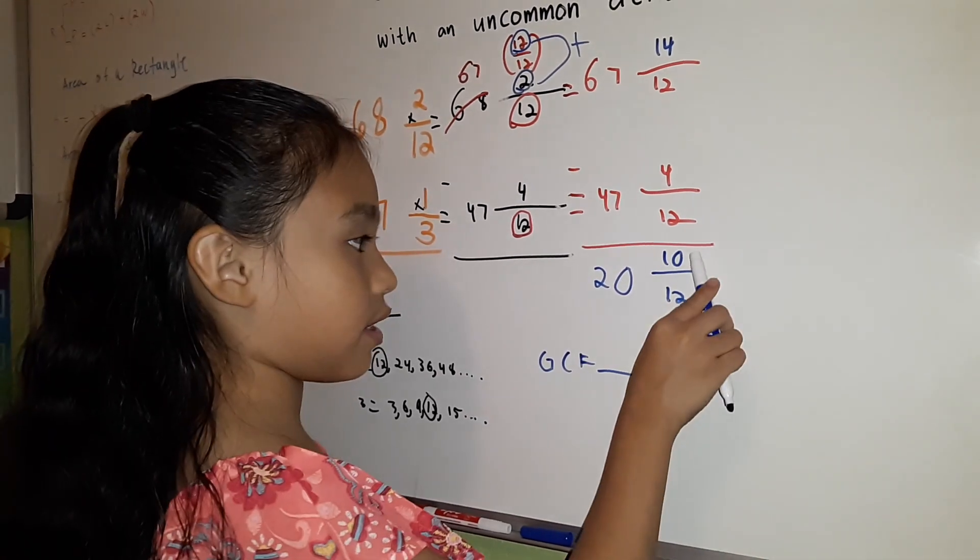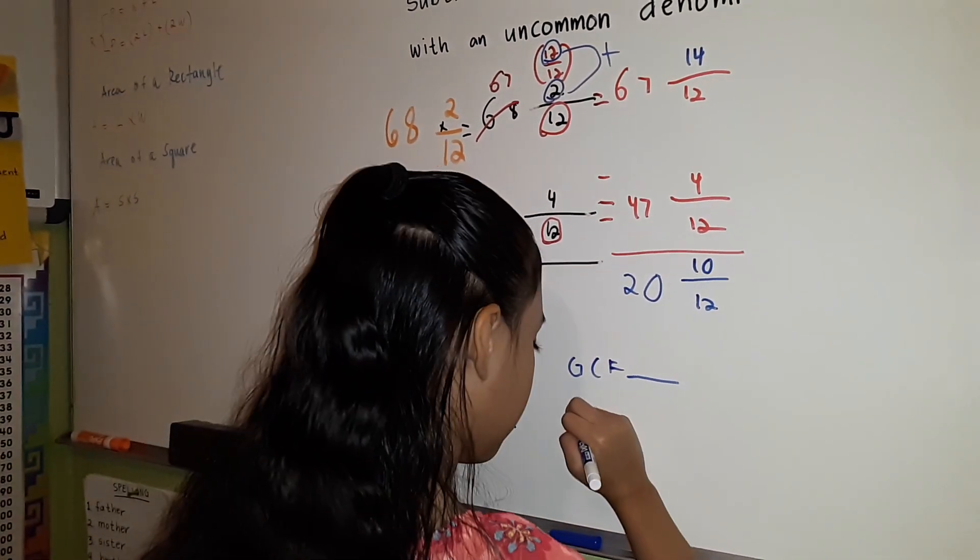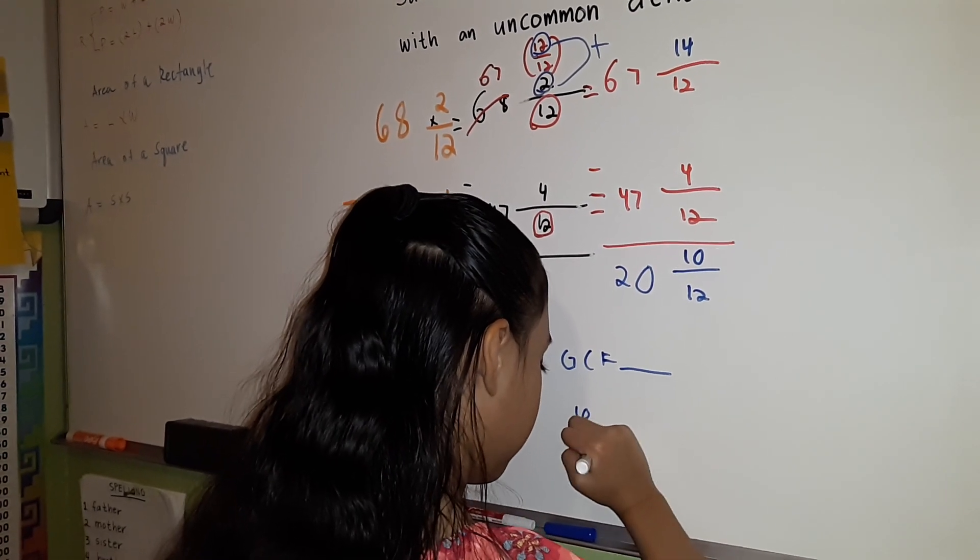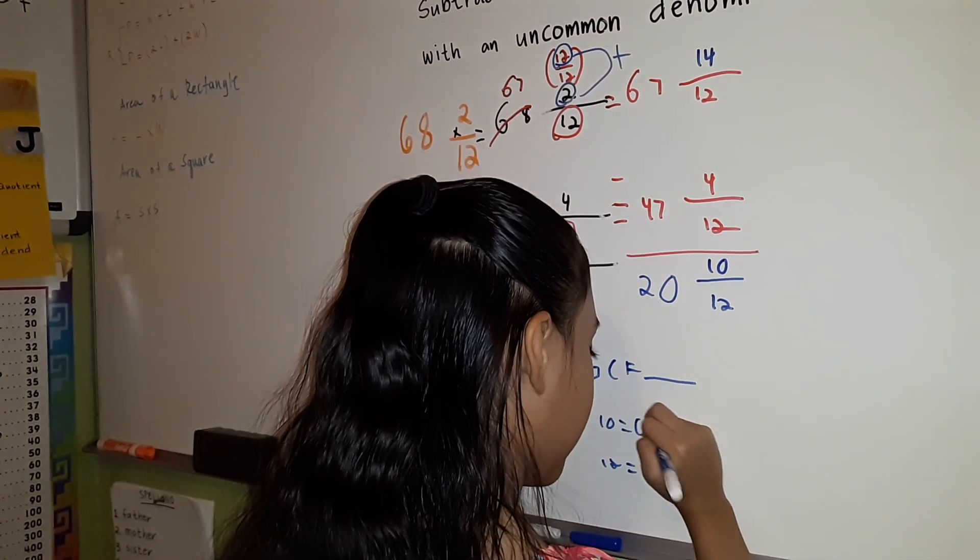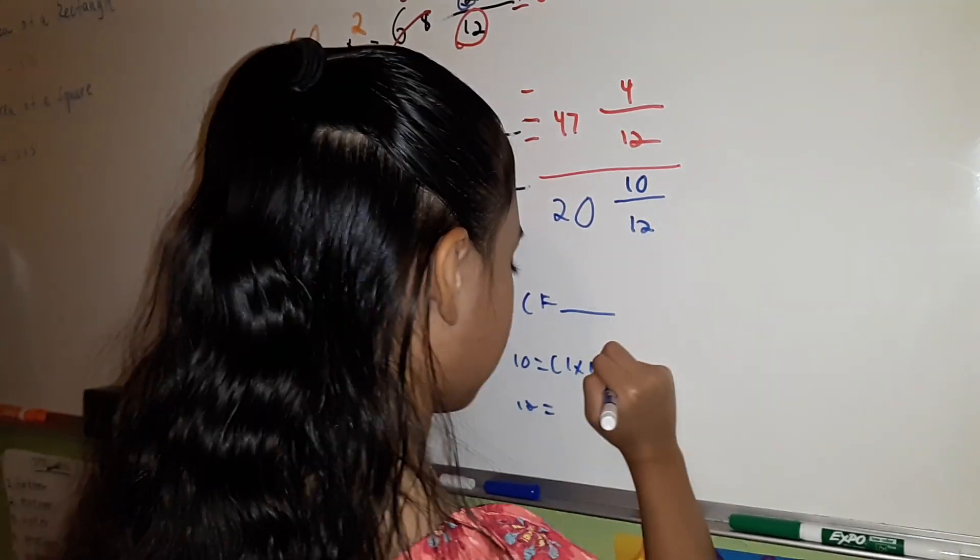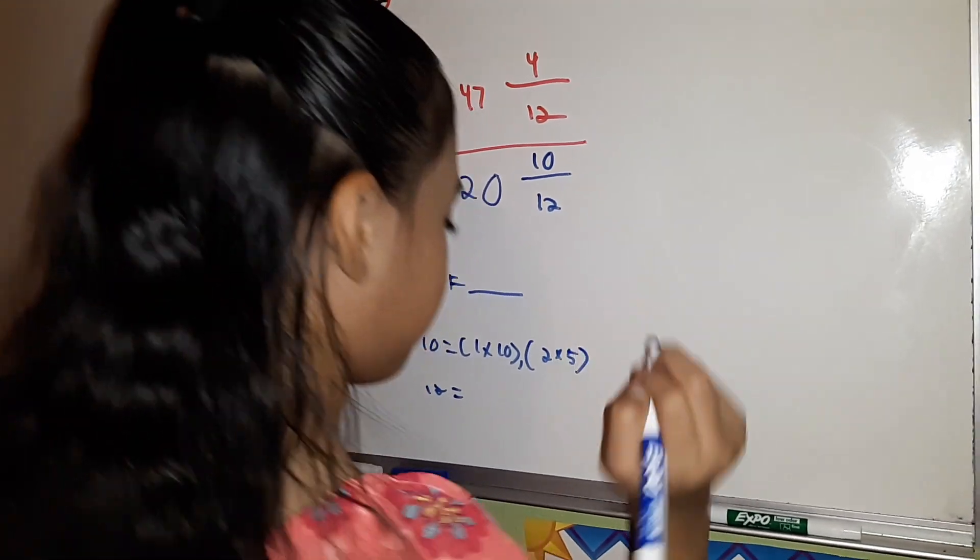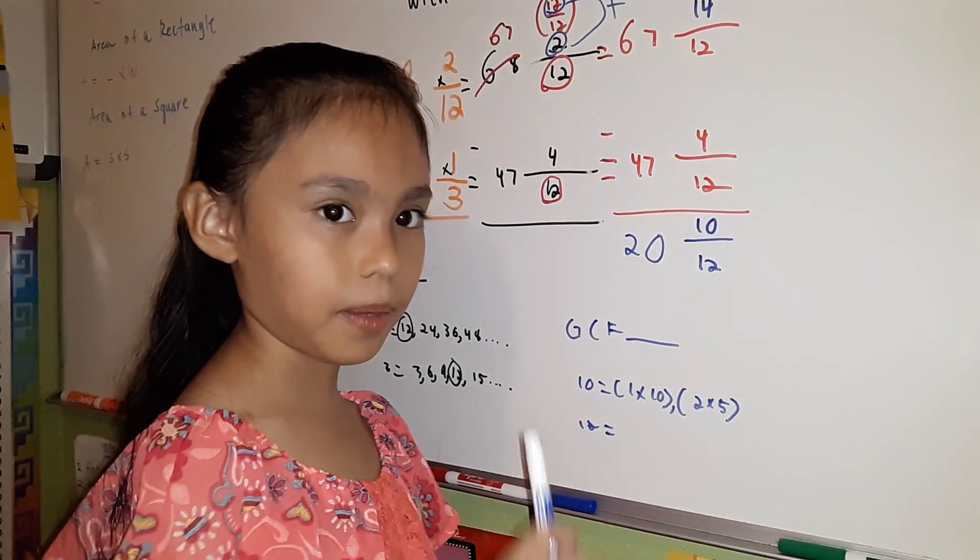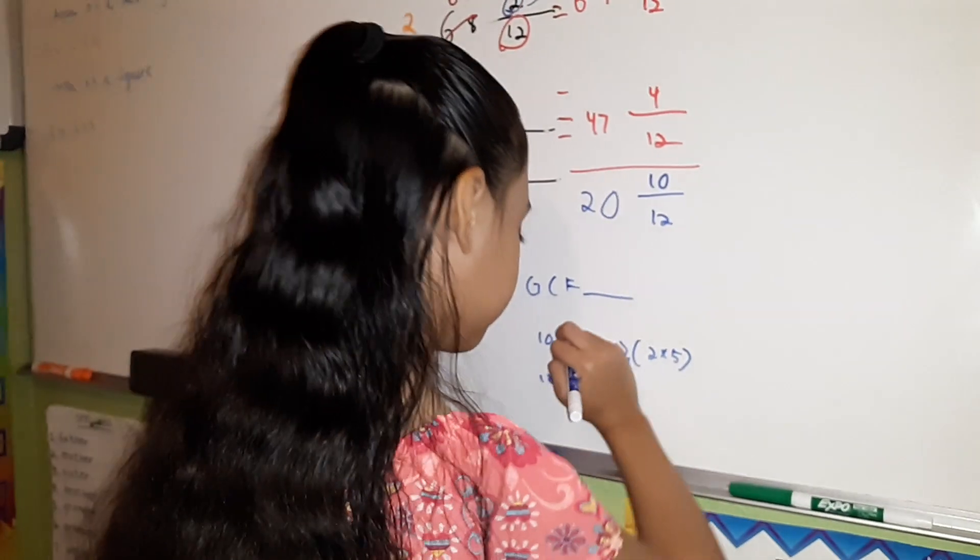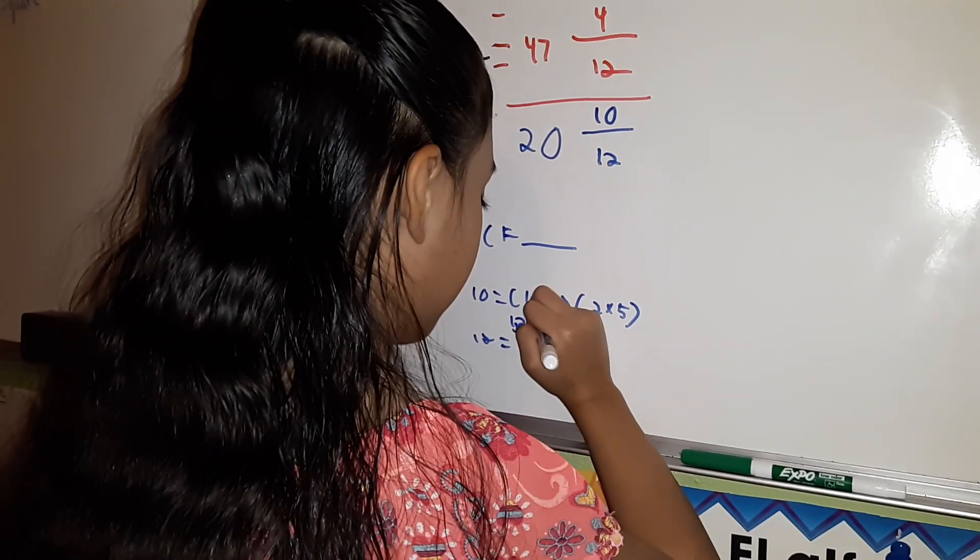To find the GCF of 10 and 12, we're going to use the pair of factors of 10 and 12. The pair of factors of 10 are 1 times 10 and 2 times 5. I'm going to write down our factors from least to greatest: 1, 2, 5, and 10.